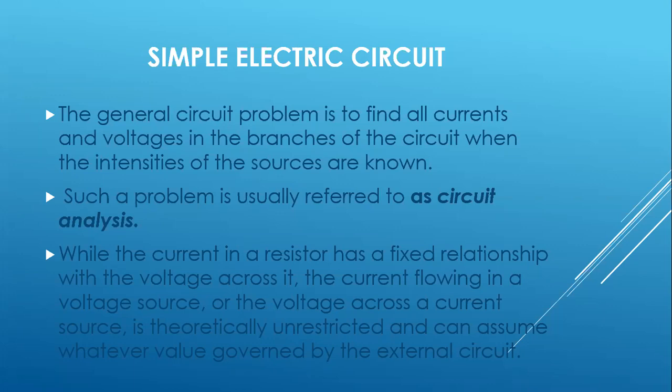Circuit analysis is used to find all the currents and voltages in the branches of the circuit when the intensities of the sources are known. While the current in a resistor has a fixed relationship with the voltage across it, the current flowing in a voltage source or the voltage across a current source is theoretically unrestricted and can assume whatever value governed by the external circuit.